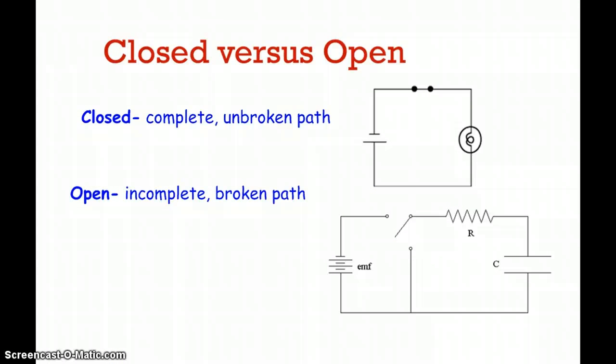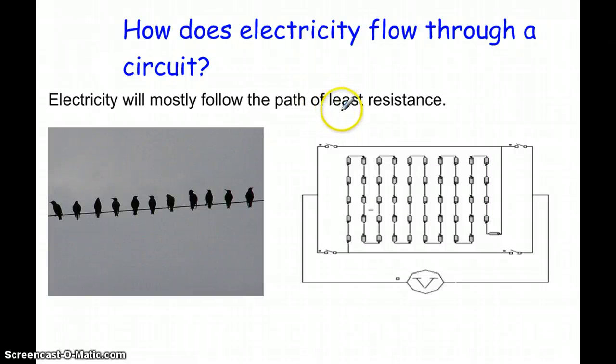Closed versus open. Pretty simple. Closed is a complete, unbroken path. This would be the picture example. Electrons can completely flow through this from the battery to the switch to the bulb and back to the battery. So complete, unbroken path. Open means incomplete or broken path. The switch is open, so it's broken. There's not a wire here connecting, so it's broken. This would be an open circuit or open path. In the battle of closed versus open, closed would win because it's the only one that would allow electricity to pass.